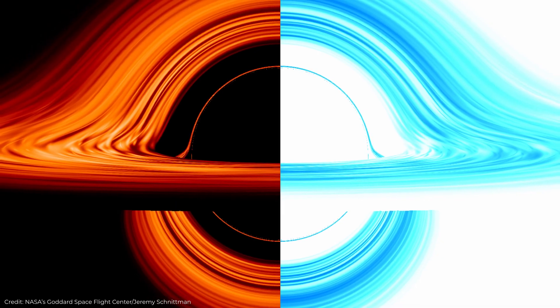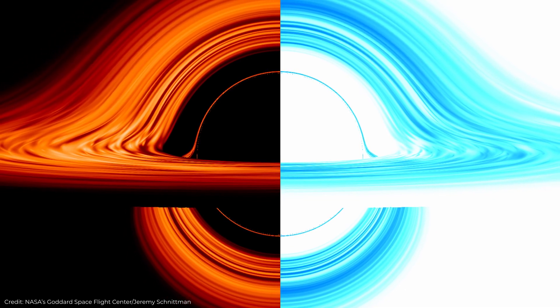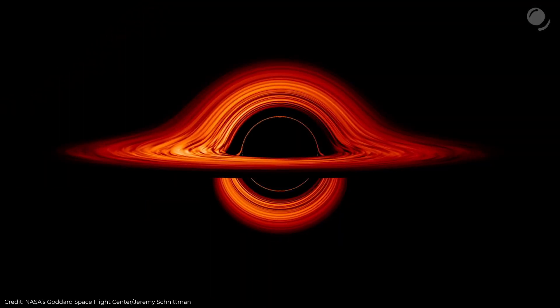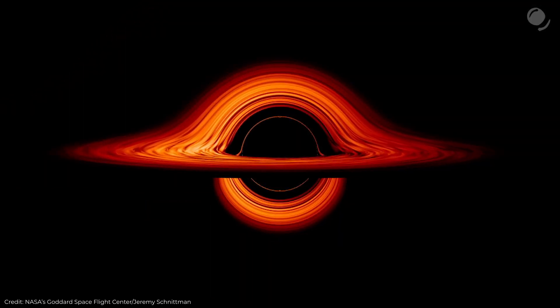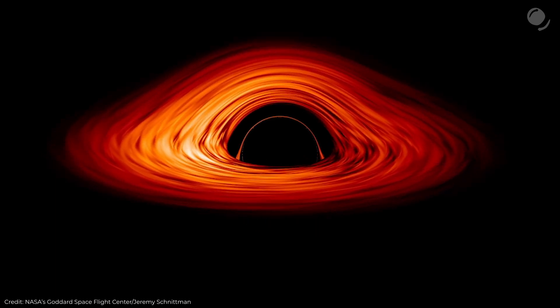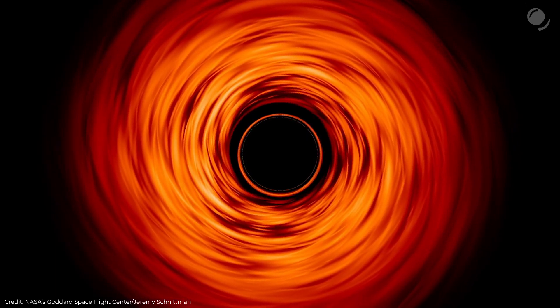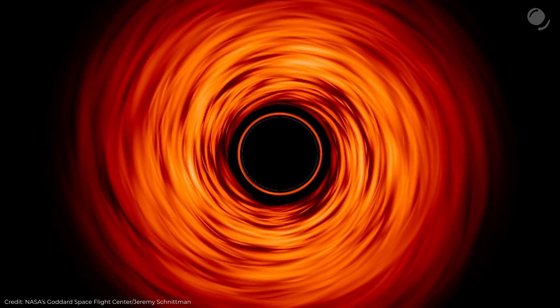Usually white holes are described as, quote, time-reversed black holes. Where does this idea come from? The existence of black holes is predicted by Schwarzschild's solutions to general relativity equations. But the idea of an object similar to a black hole existed all the way back in the 18th century. Basically, the same math that predicts black holes predicts white holes as well.